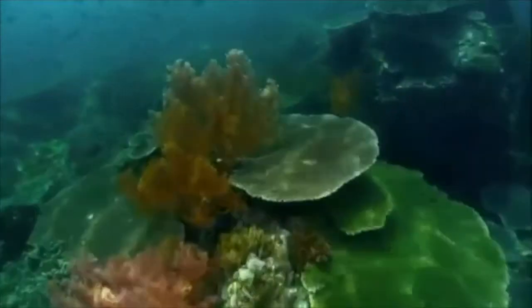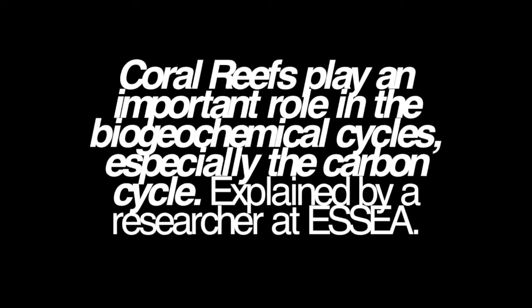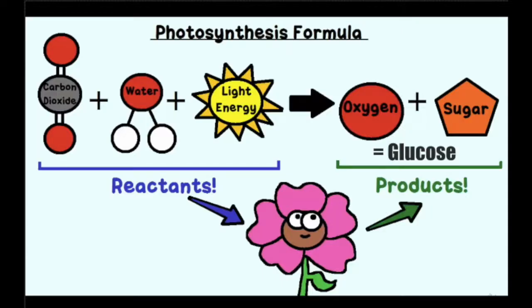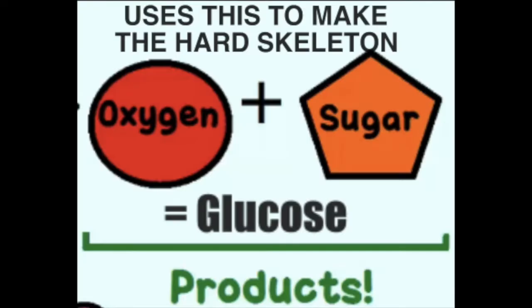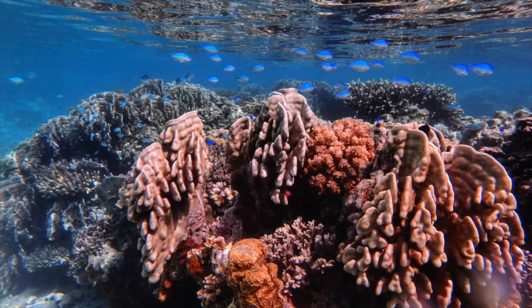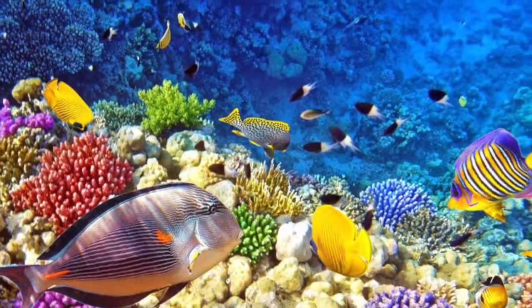Coral reefs play an important role in the biogeochemical cycles, especially the carbon cycle. The reef — specifically coral — takes carbon dioxide from the water and uses it to create hard skeletons for itself. Therefore, the carbon cycle is both beneficial for the earth, as the reef becomes a sink for the world's carbon dioxide, and for the reef's coral, as it gains protection. These corals enormously enhance the biodiversity of the reef.